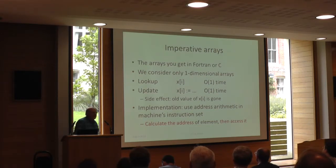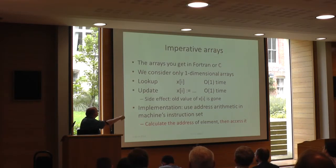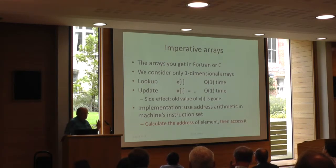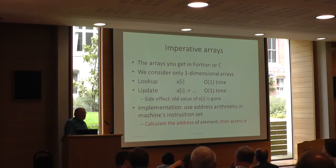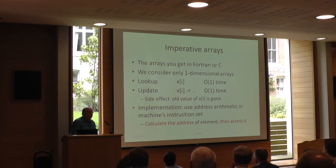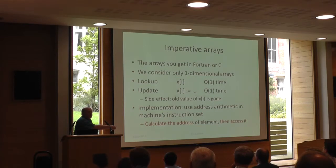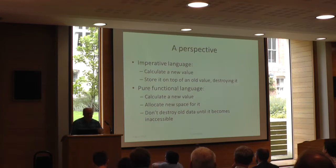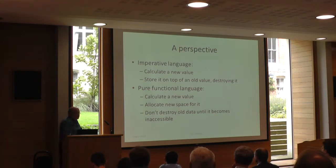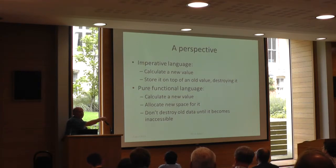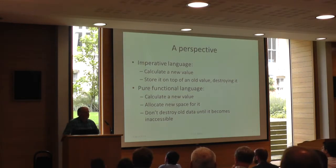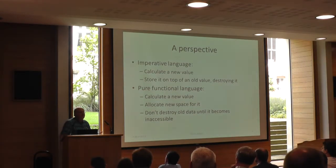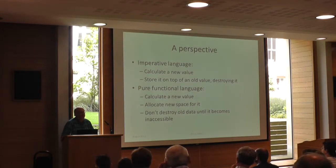Everybody knows what an array is — an imperative array, four-handlock arrays. We're just going to be concerned with one-dimensional arrays, and the critical point is that the implementation will calculate the address of an element and then access it. Here's one way I like to look at functional versus imperative languages. In an imperative language you calculate some new data and then you zap it on top of an old word in memory and you destroy the old information. So you're doing some storage management at the same time you're doing the computing, whether you want to or not.